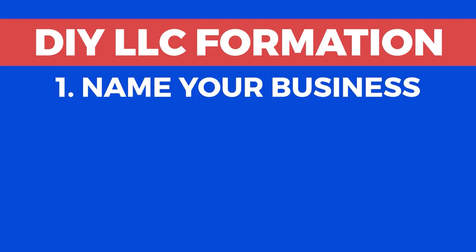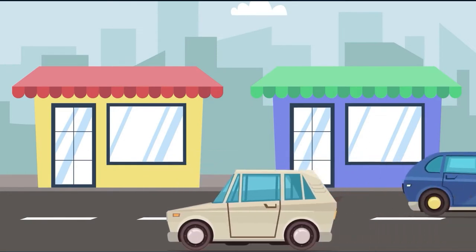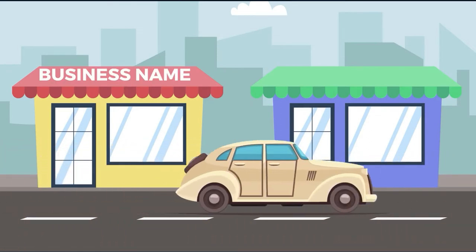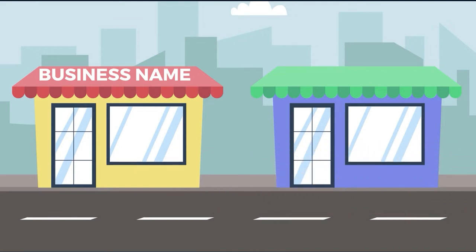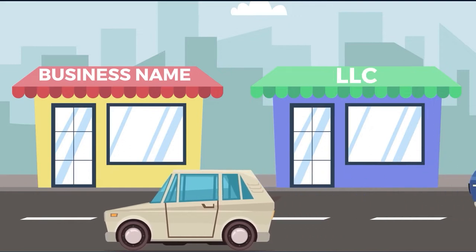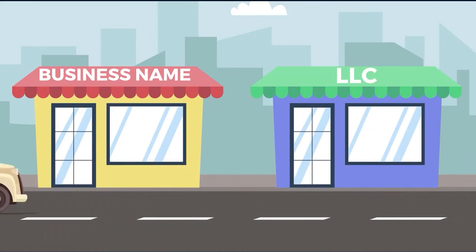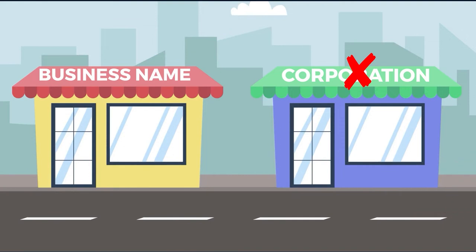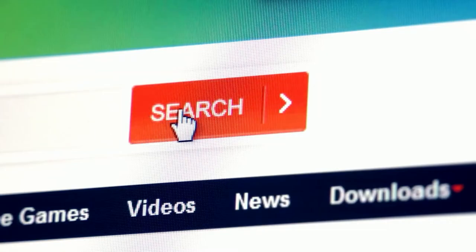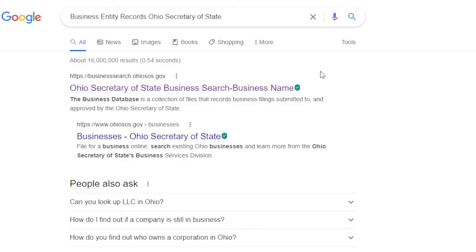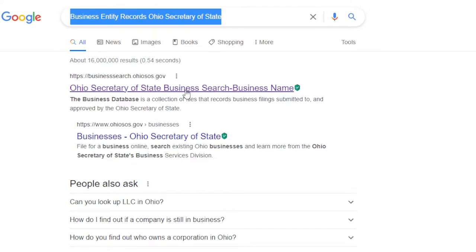Step 1: Name your business. Before anything else, you'll have to think of the LLC's legal business name. Each LLC in Ohio must have a distinct name that is not currently in use. You must include the terms 'limited liability company' or an abbreviation such as LLC. You cannot include phrases such as 'corporation,' which would lead people to believe you are a different business type. Simply go to Google and type in 'business entity records, Ohio Secretary of State,' and click the first search result.